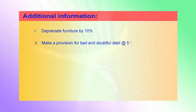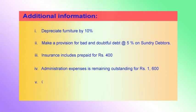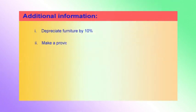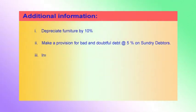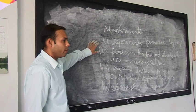The adjustments given are: Number 1 — depreciate furniture by 10%. Number 2 — provision for bad and doubtful debts at the rate of 5% on sundry debtors. Number 3 — prepaid insurance rupees 400. Number 4 — outstanding administrative expenses rupees 1,600. Number 5 — closing stock 12,000.